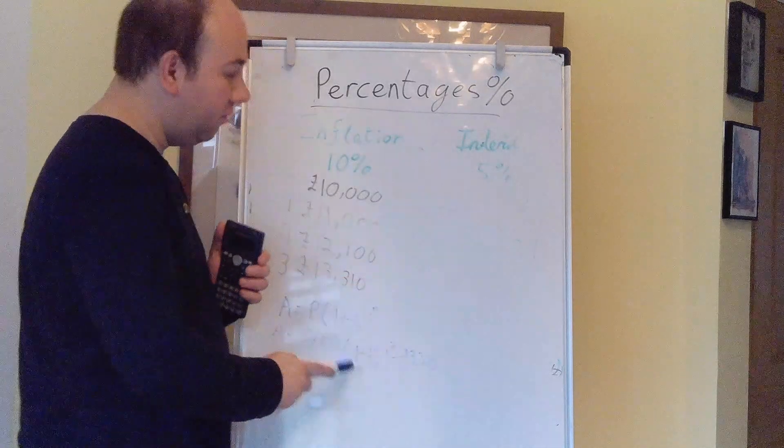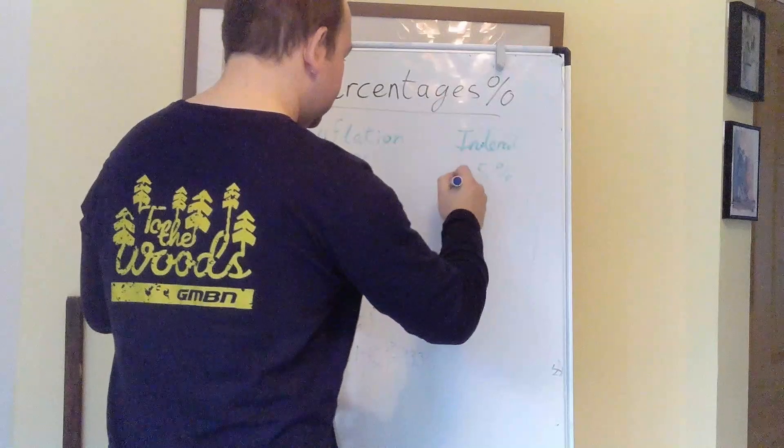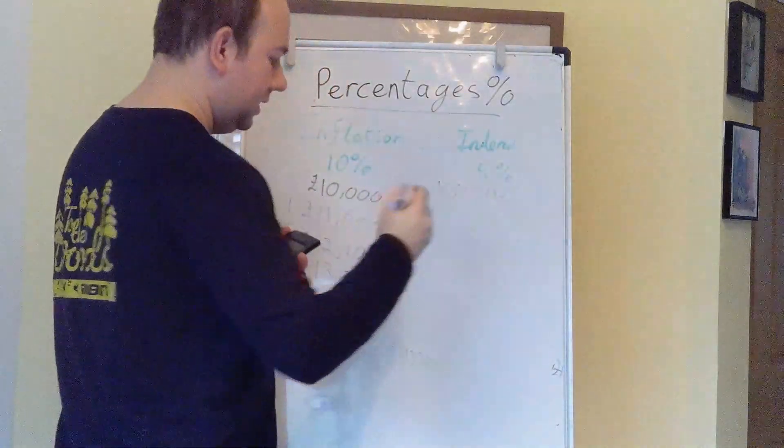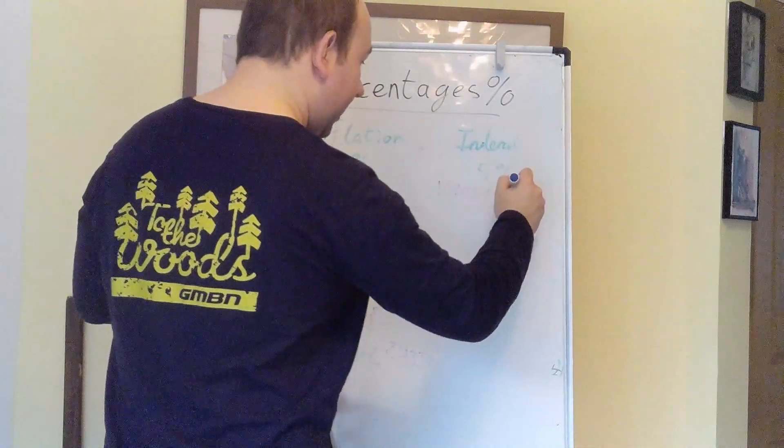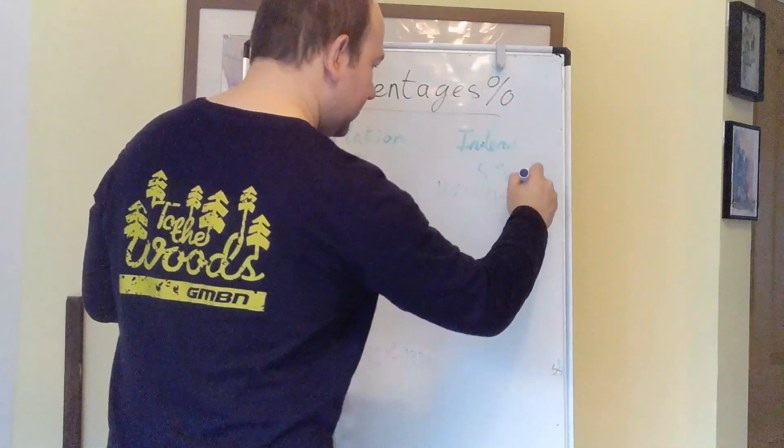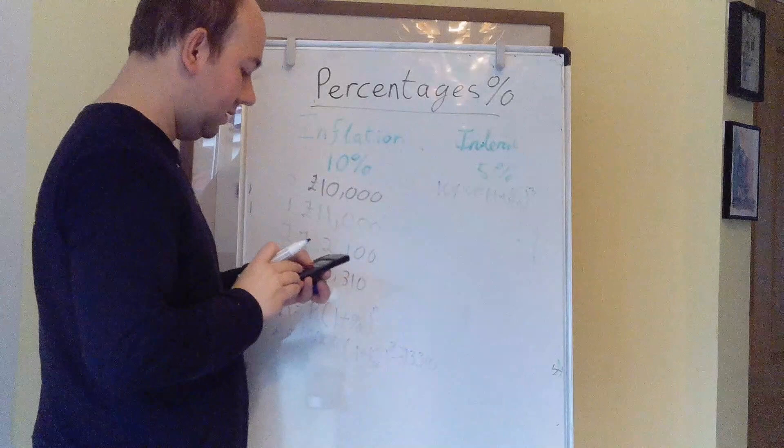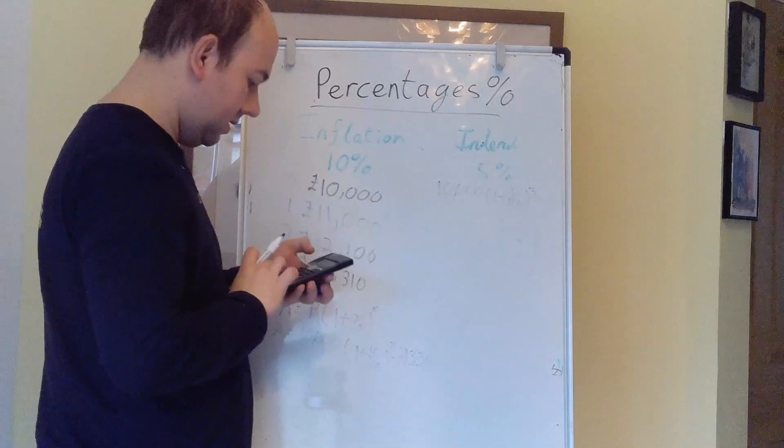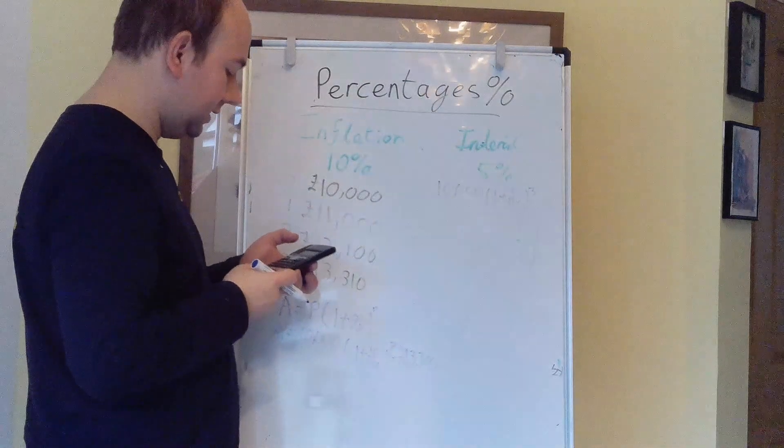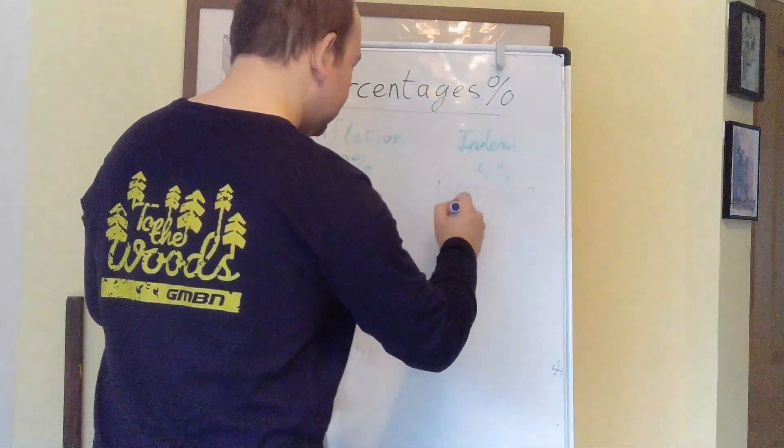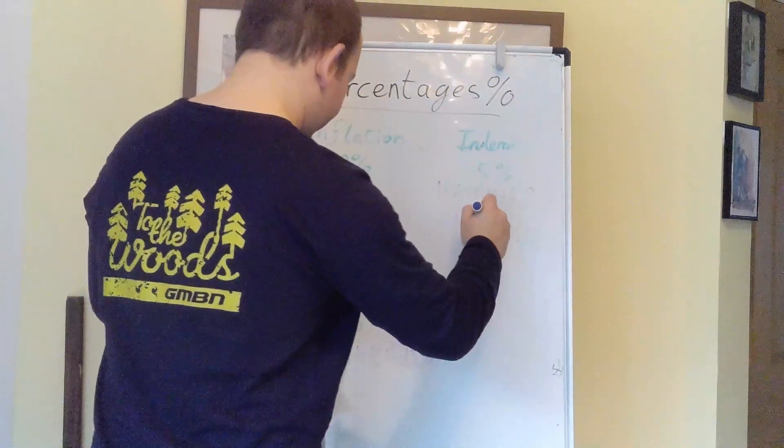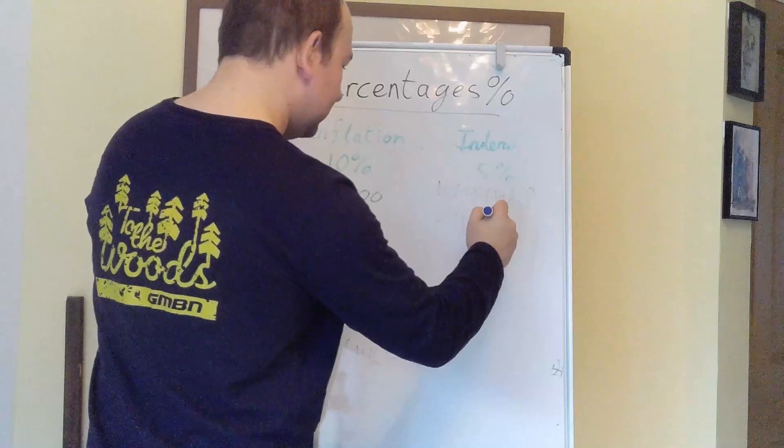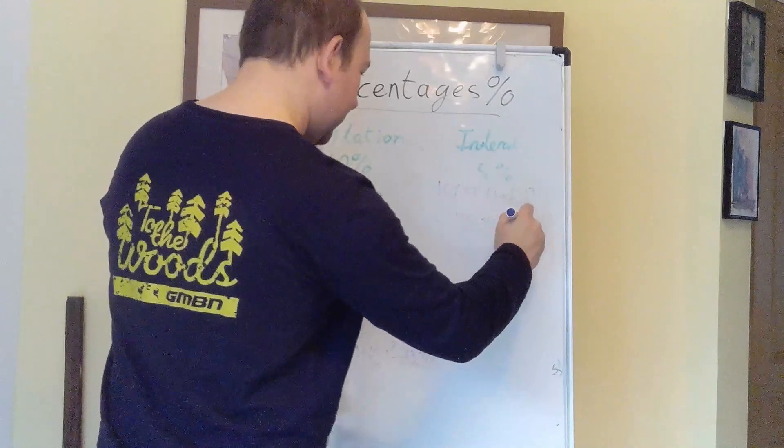Now we can apply this exact formula to the interest rate. 10,000 times 1 plus 5 over 100, to the 3. So when I've worked this out, what this comes to is £11,576.25.